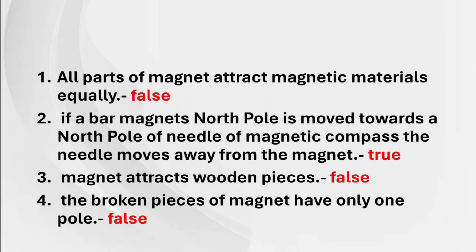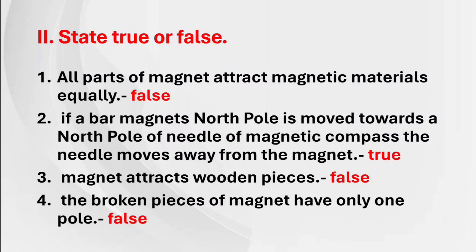Extra true or false: All parts of a magnet attract magnetic materials equally — False. If a bar magnet's north pole is moved towards the north pole of a needle of a magnetic compass, the needle moves away from the magnet — True. A magnet attracts wooden pieces — False. The broken pieces of a magnet have only one pole — False.